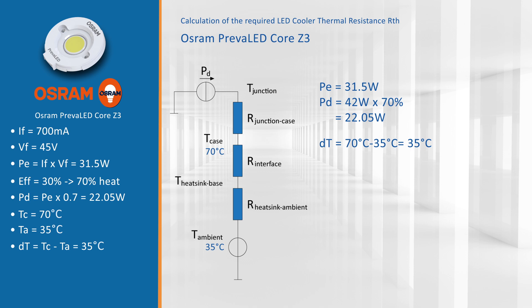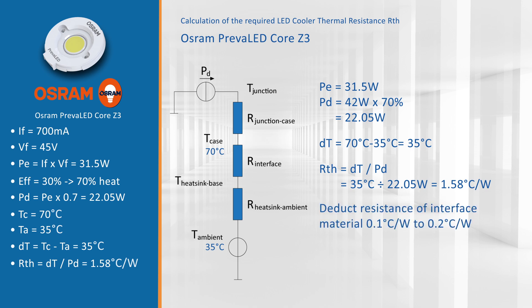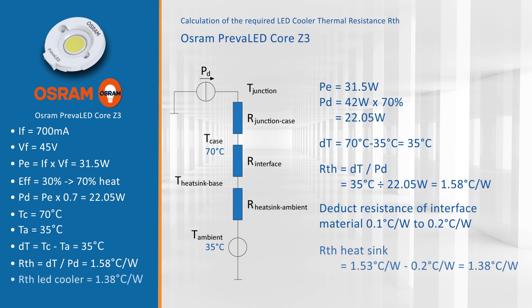Now we put these two values in a simple formula. We divide the delta T — the temperature difference of 35 degrees Celsius — by the dissipated power of 22.05 watts. That gives us a thermal resistance of 1.58 degrees Celsius per watt. From this we deduct the thermal resistance of the interface material, which is in a practical way somewhere between 0.1 to 0.2 degrees Celsius per watt. So we get a thermal resistance of the LED cooler of 1.38 degrees Celsius per watt.